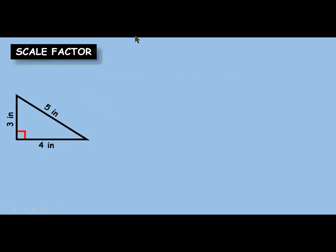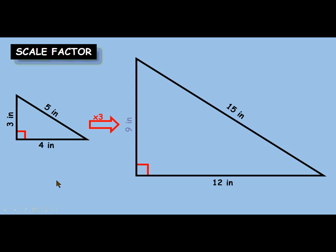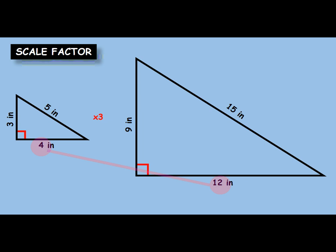We're going to do the same thing, except with triangles. Here we have a simple 3-4-5 right triangle, and we're going to create a larger one that's three times larger. So our scale factor is three. That means any set of corresponding measurements — three times three to get nine, five times three to get 15, and four times three to get 12 — all those measurements in the big triangle are exactly three times larger than those in the small triangle.